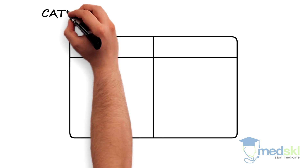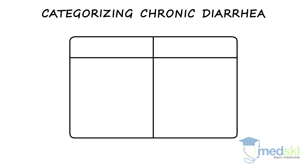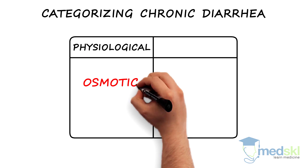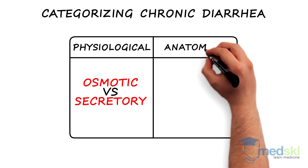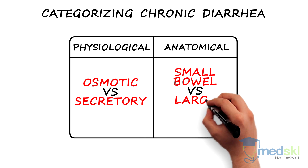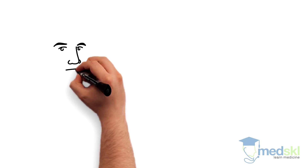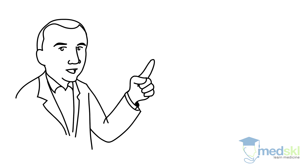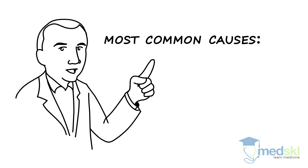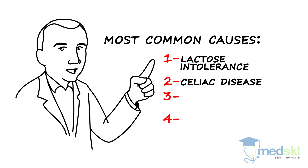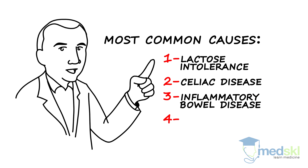There are several approaches to categorizing chronic diarrhea: physiological, osmotic versus secretory, and anatomical, small bowel versus large bowel. However, my preference is to look at this problem in terms of the four most common causes: lactose intolerance, celiac disease, inflammatory bowel disease, and by default, irritable bowel syndrome.